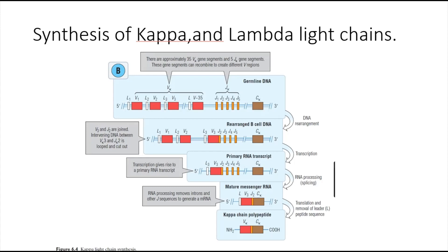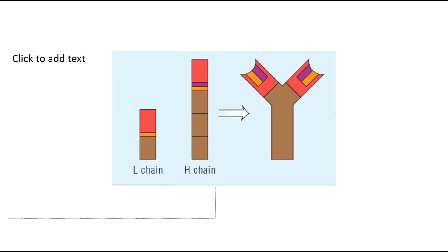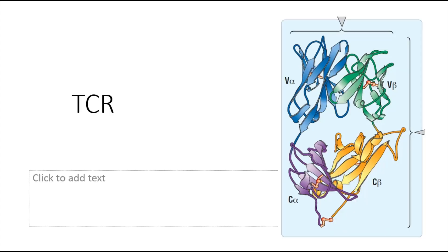Other than that, they are very similar in the way they work. Finally, we have, in this example, a kappa chain polypeptide which is joined with the heavy chain polypeptide, giving us a functional antibody.